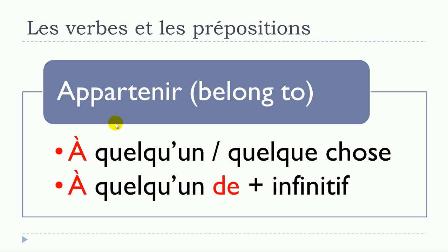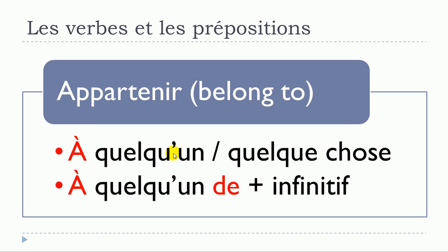Appartenir. The first structure we can see is: appartenir + à, followed by quelqu'un or quelque chose. The second structure is: appartenir à quelqu'un, then you put the preposition de, followed by the verb at the infinitive form.